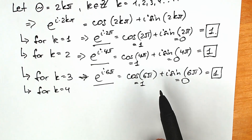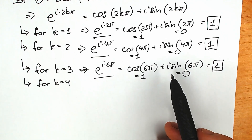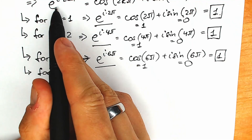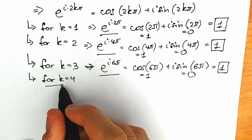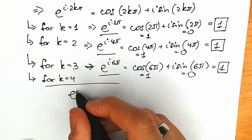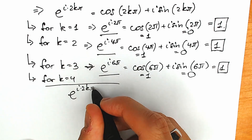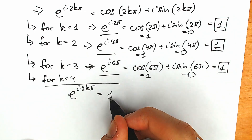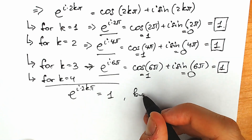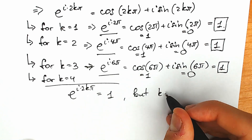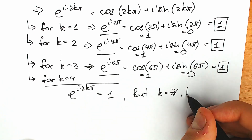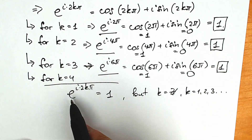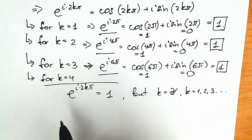So the general result is: e to the power i times 2kπ equals one, for all integer k. We have proved that this expression always equals one — whether k is one, two, three, or any integer.